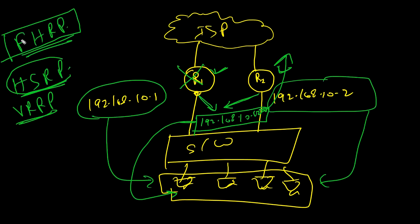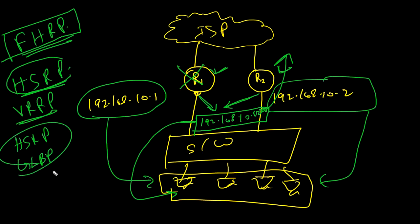If I talk about the protocols, we have multiple protocols under FHRP. For Cisco proprietary protocols, we have two: HSRP and GLBP. For open standards, we have VRRP. This is how we explain what FHRP is.